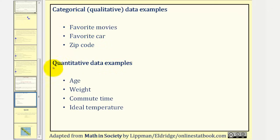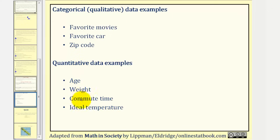Some quantitative examples would be age, weight, commute time, and ideal temperatures. Notice that for this type of data, if we were to find the average, the calculation would be meaningful. We're going to stop here for this intro video.